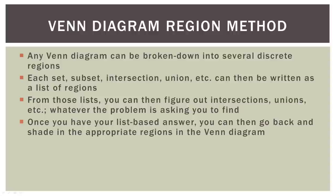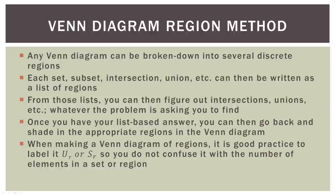Once you have your list-based answer, you can then go back and shade in the appropriate regions in the Venn diagram itself. One caveat: when you make a Venn diagram and list the regions on it, it's good practice to label that Venn diagram as U sub R or S sub R — universal set of regions, or set of regions. That way you don't confuse the region labels with the actual numbers that are part of the problem. You might label the intersection as region 1, but the problem may have a 3 in that region because that's the number of elements there.